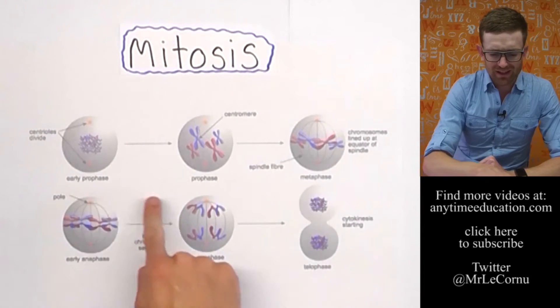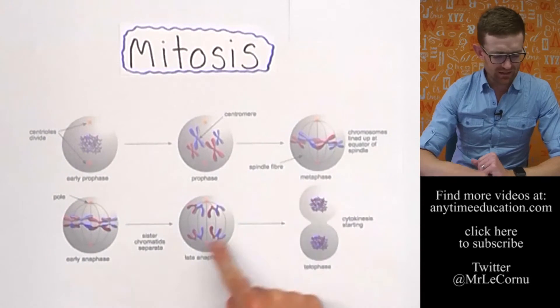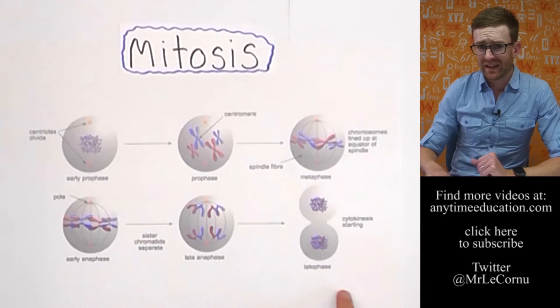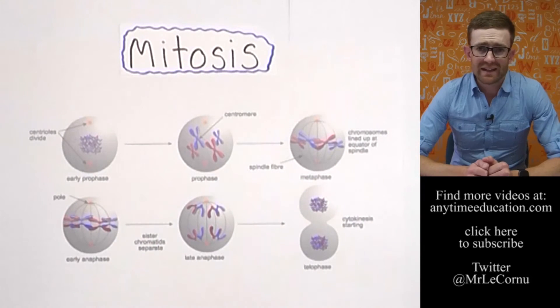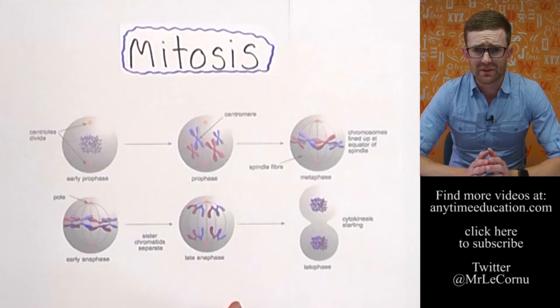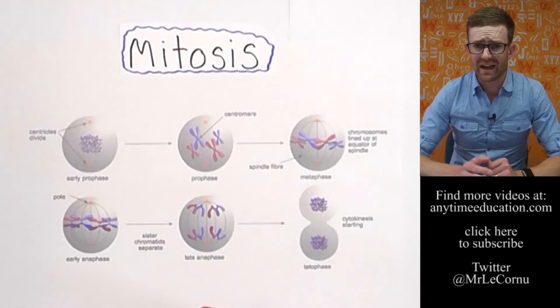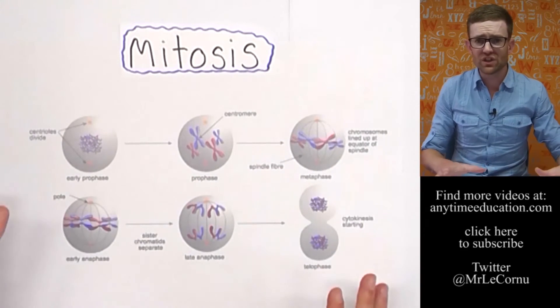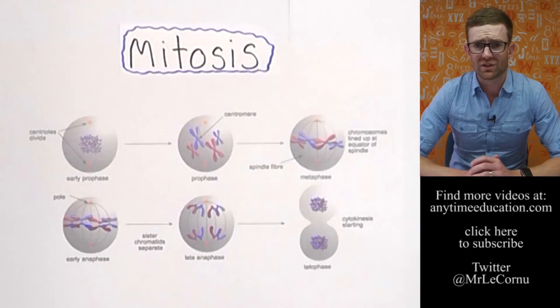To help understand it, we break it down into four stages or phases. They're called prophase, metaphase, anaphase, and telophase. And you need to be able to understand and illustrate what happens at each of those phases. So what I'm going to do now is demonstrate visually what's happening in each of the phases.